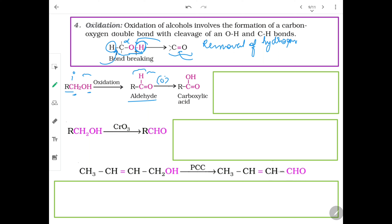Now oxidation of aldehyde — it is very simple: addition of oxygen. So primary alcohol on oxidation gives aldehyde, with no change in the number of carbon atoms. The alcohol you have will give an acid, depending upon the oxidizing agent.